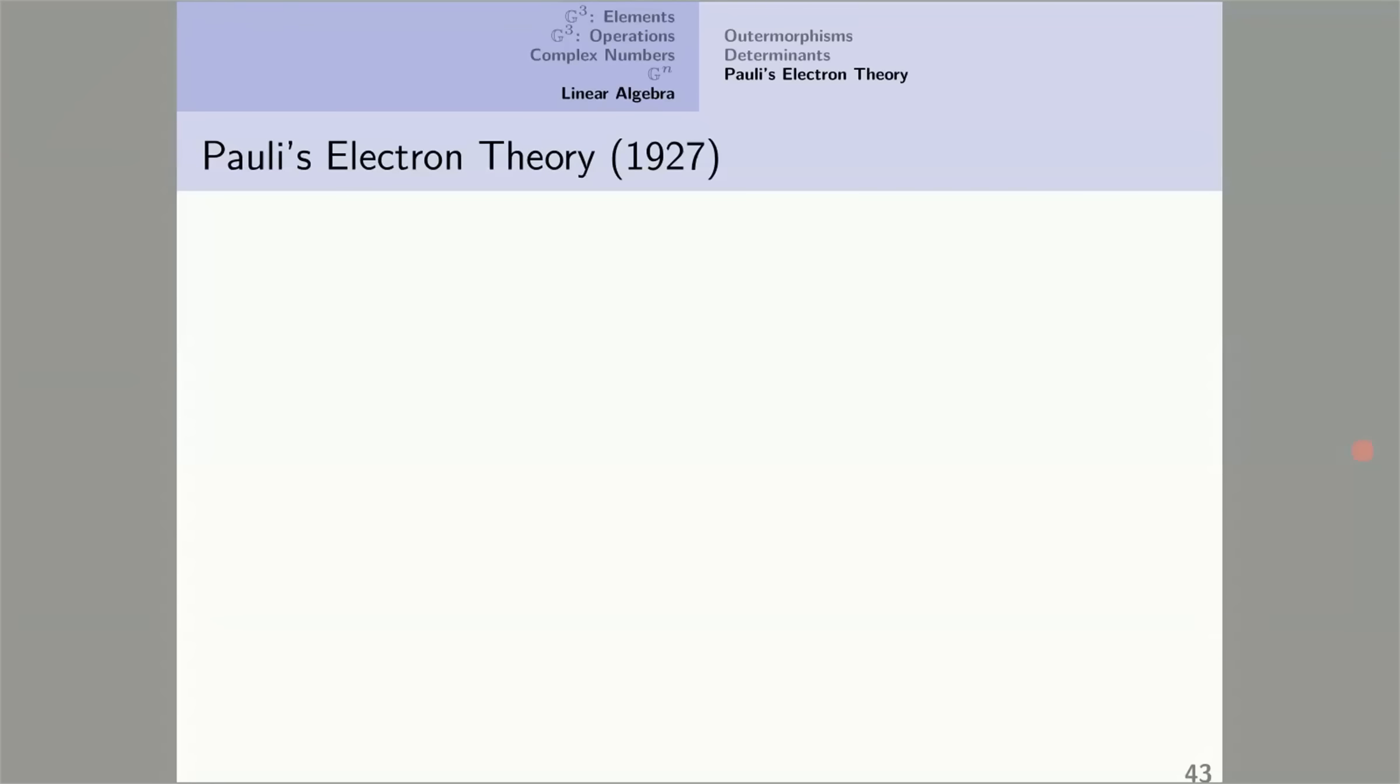We'll end this introduction to geometric algebra with an application to physics, Pauli's electron theory. Pauli devised a theory of the electron, a quantum mechanical theory of the electron. Let's see some of its aspects. An electron has a property called spin, which is denoted S. This is a quantum mechanical phenomenon. There's no classical analog to this property of electron spin.